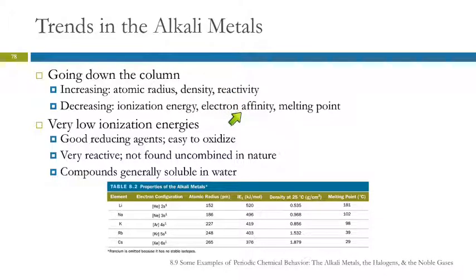Electron affinity generally would go opposite of the ionization energy. So, the electron affinity is going to be less. The melting point is going to be less. In general, these have very low ionization energies.